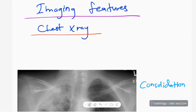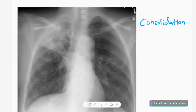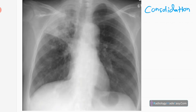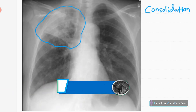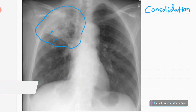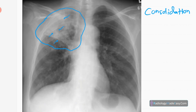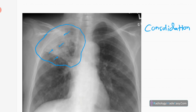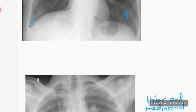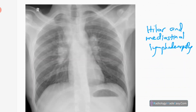Now I'm going to discuss the imaging features — the main idea of this Radiology Made Easy series. First, chest X-ray features. This is the frontal chest radiograph of a young patient. You can see inhomogeneous opacification in the right upper lobe with air bronchogram formation — it's consolidation in primary TB. There are no cavities and no traction bronchiectasis. The left lung is normal.